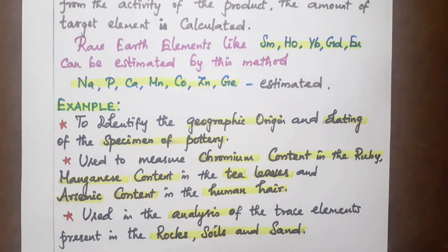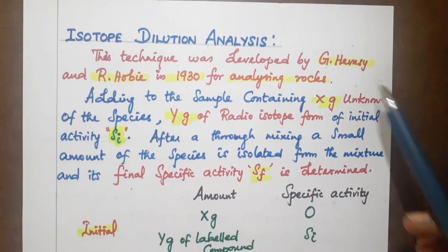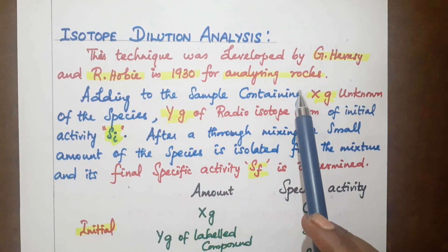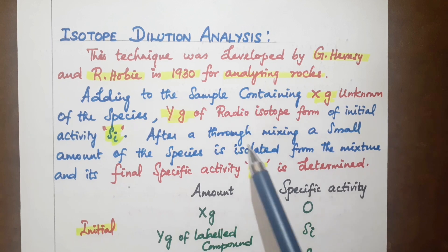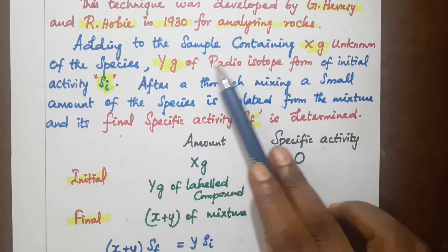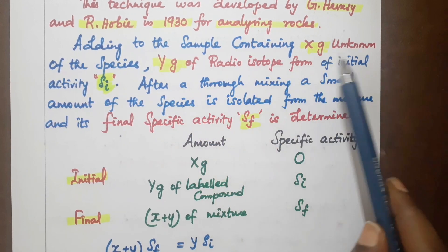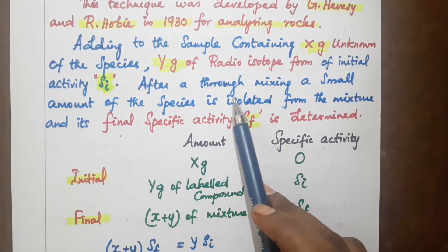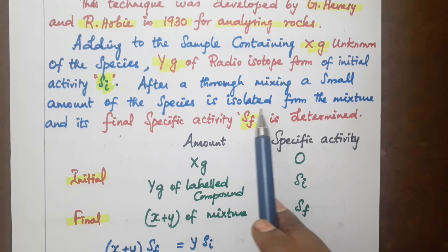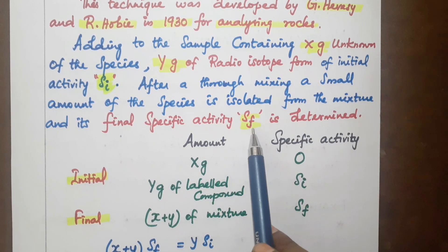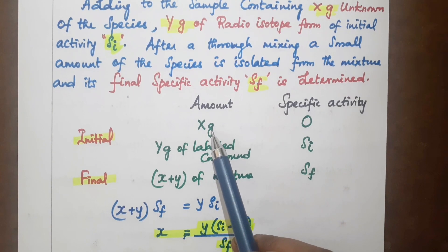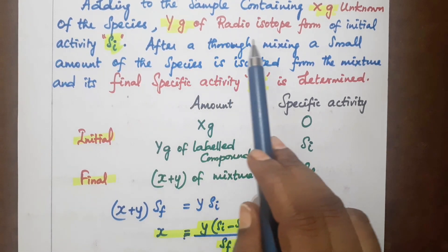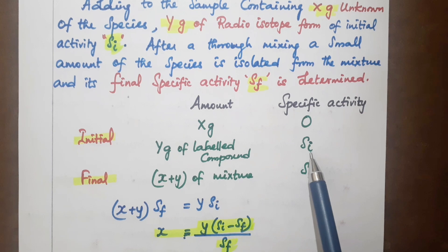Next topic: Isotope Dilution Analysis. In this technique, one part of the sample has an unknown amount — that is, specific activity is zero. Another portion has a known specific activity Si (initial), giving two different activities.